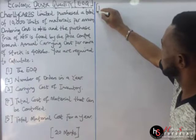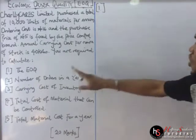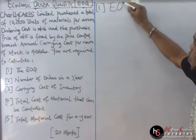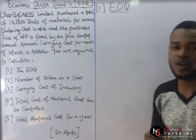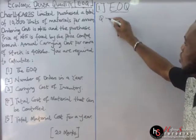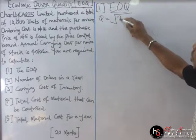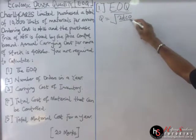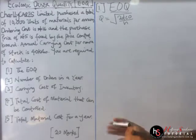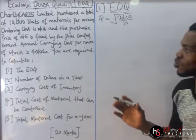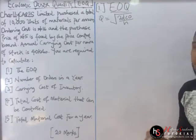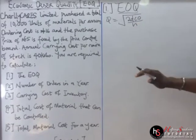Let us solve number one — the EOQ, economic order quantity. The formula I gave us: Q is equal to the square root of 2dCO over H. We are going to apply that here. But before we go on, we need to interpret this question first. We need to identify the values we have to make use of.